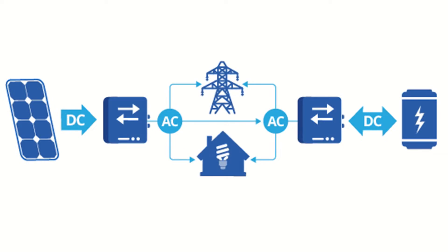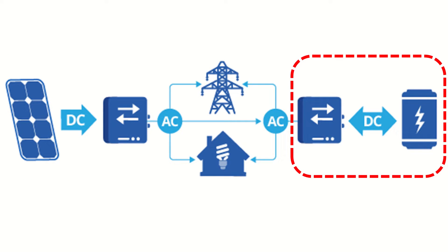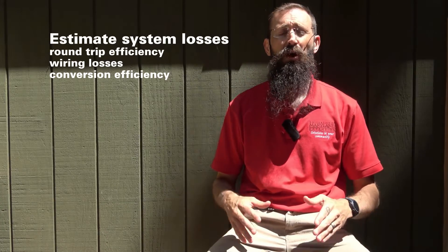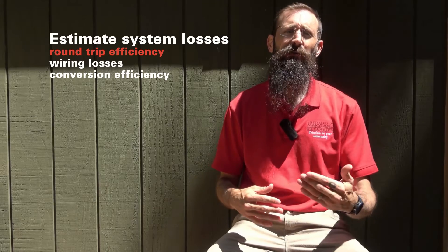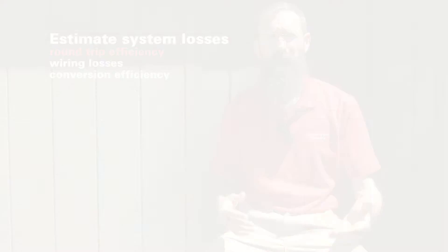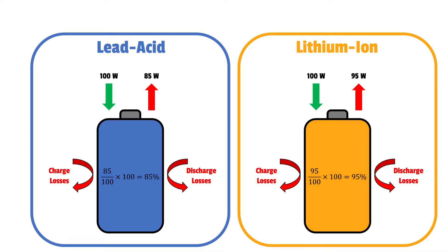Before determining battery bank size, we'll estimate system losses. In today's video we focus on load subsystem efficiency, including round trip battery efficiency, wiring loss, and conversion efficiency. Since no battery is 100% efficient, we use a round trip efficiency factor to measure energy retention after charging and discharging. The round trip efficiency for a lead acid battery is commonly around 85%, while lithium ion batteries are commonly around 95%. These loss estimates are based on the chemistry of each battery — lead acid batteries typically operate with lower electrical currents and take longer to charge.